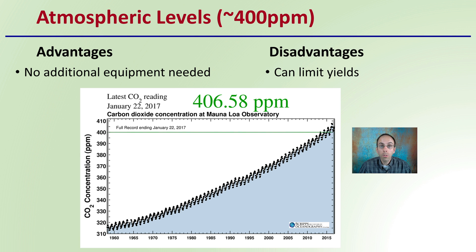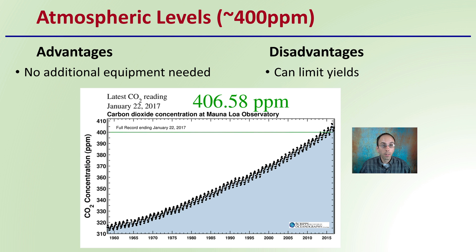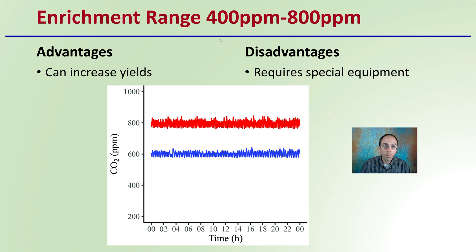If you're in a closed growing area, you definitely want to make sure you're moving air around, because there is a chance that 400 parts per million — that is normal atmospheric levels — in your growing facility could be lower. So what if we enrich to the 400 to 800 parts per million range?